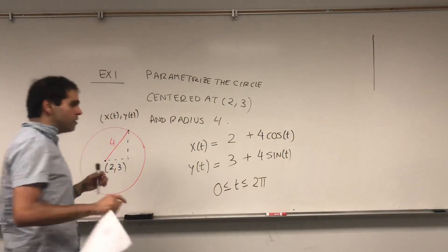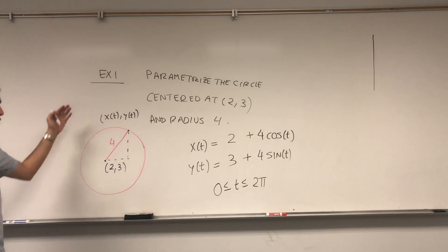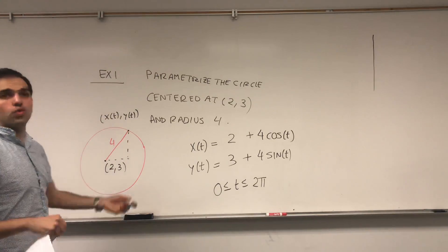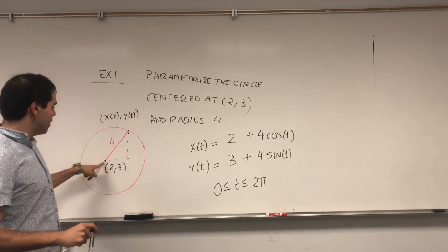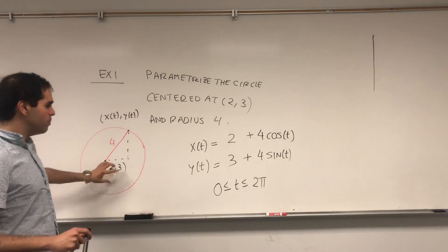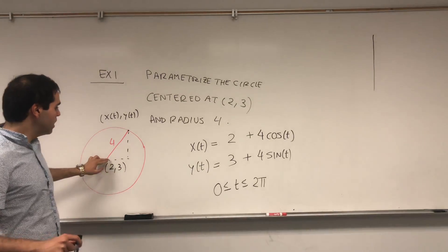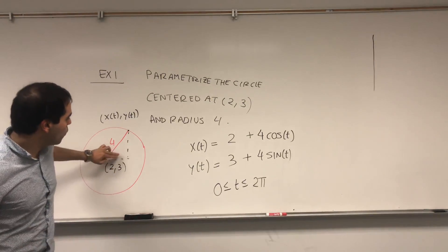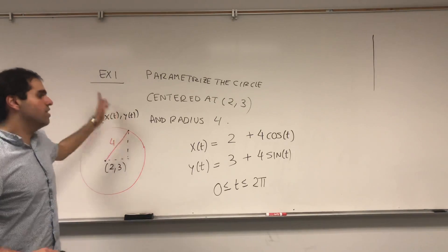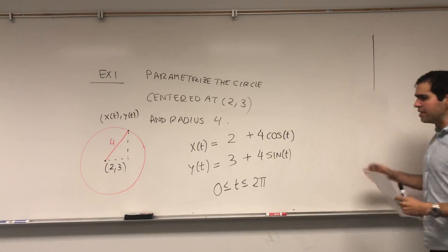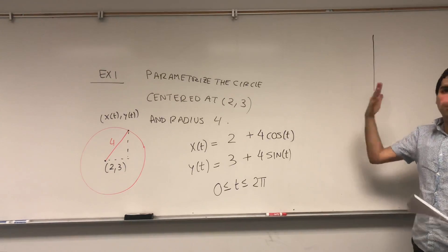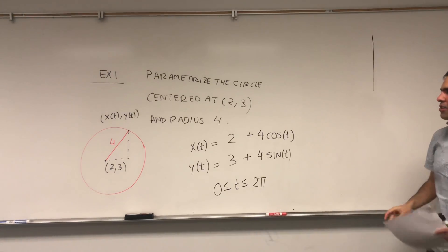And this is, again, how we can write the circle in terms of one variable, which makes sense because the circle is a one-dimensional object. So, again, just to clarify, we start at 2, 3 because the center is at 2, 3, and then you're just adding polar coordinates, so 4 cosine of t and 4 sine of t. That's the one, maybe, again, the most prominent example of a parametrization.